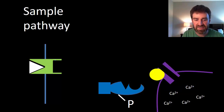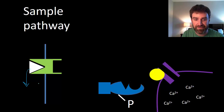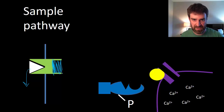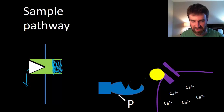The signaling pathway can eventually be turned off. Maybe the initial ligand falls off, causing the receptor protein to change shape back to its closed form, and eventually all the previously activated proteins in the pathway get deactivated.